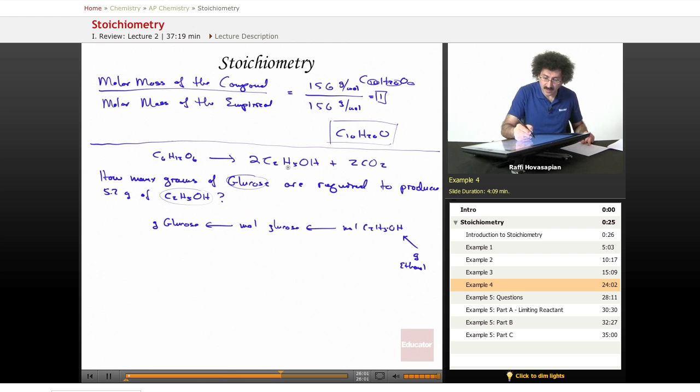I'm given grams of this, 5.2 grams of this. I have to go from grams to moles, mole to mole. I use mole ratio, that one. And then from mole back to gram. This is my path. I go from here, to here, to here, to here. That's it. I have one, two, three arrows. That's three conversion factors.